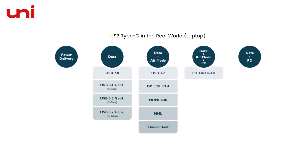A USB Type-C port may support any of these standards, but to provide output for an HDMI port, your device needs to have a USB-C 3.1 port or a Thunderbolt 3 port, which supports DP-Alt mode.